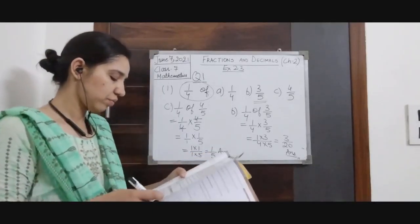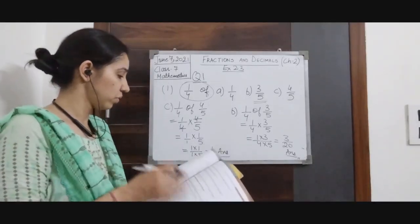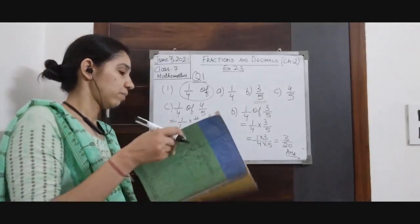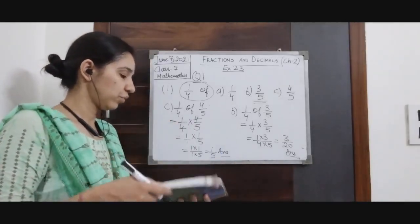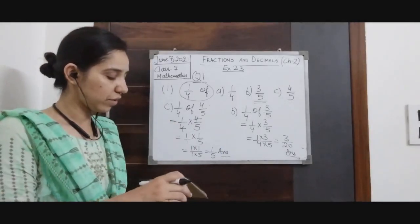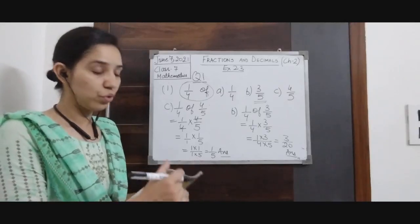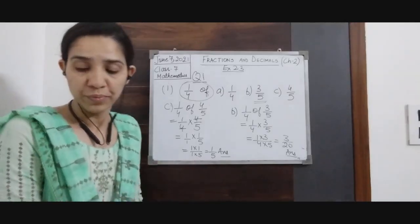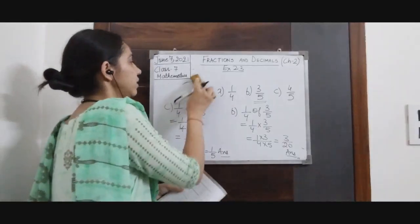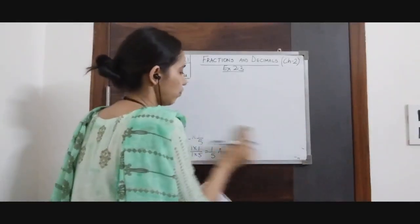Similarly part B we can do by applying the same process. Then we have question number 2: multiply and reduce to lowest form. We have to multiply and then reduce to simplest form.